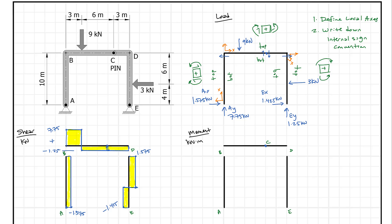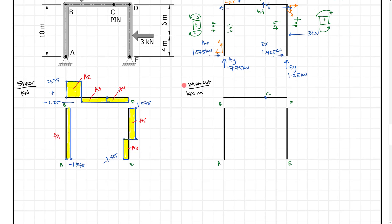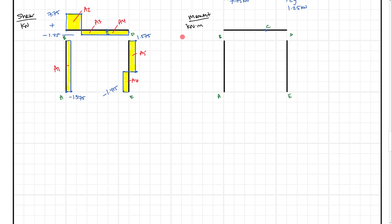Now we want to go ahead and solve for the moment diagram. When we do a moment diagram, I like to label the areas. We have A1, A2, and I'm going to break the pin region up into A3 and A4 because we want to see the moment go back to zero at that point. Then A5 and A6 for the last member. There are a lot of areas, but they're easy to find because they're all just rectangles.